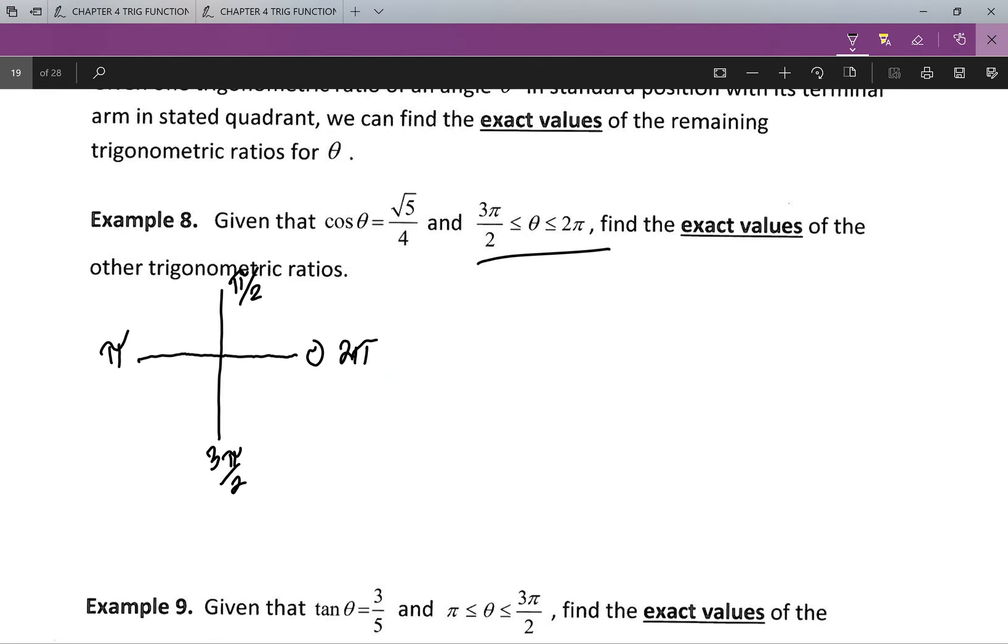So if we're between three pi by two and two pi, that means I'm going to be in quadrant four. So I'm going to draw my triangle first.